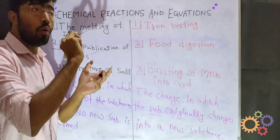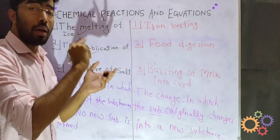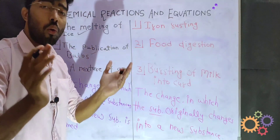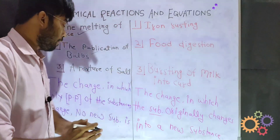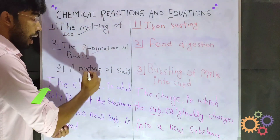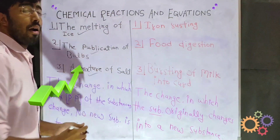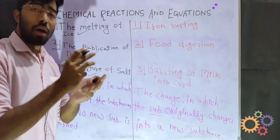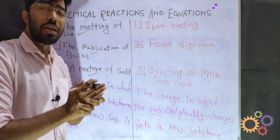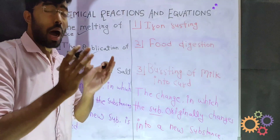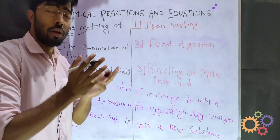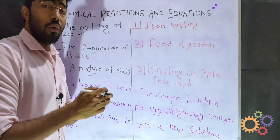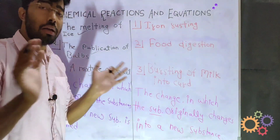If you can see the glowing of a bulb — is any new substance created? No. It can be separated; it can be divided. Okay, there is no new substance created here either.